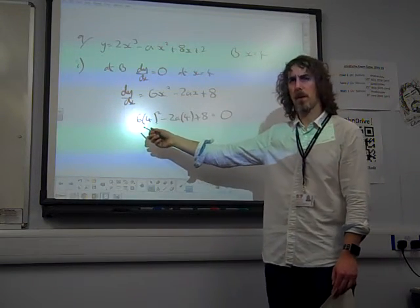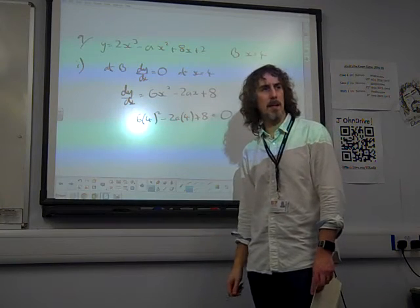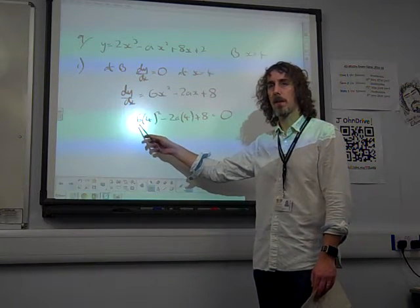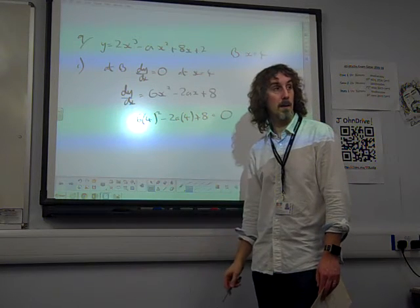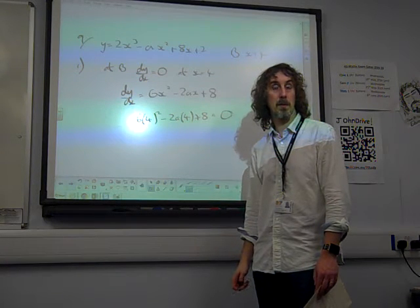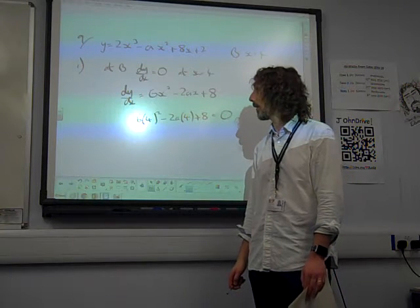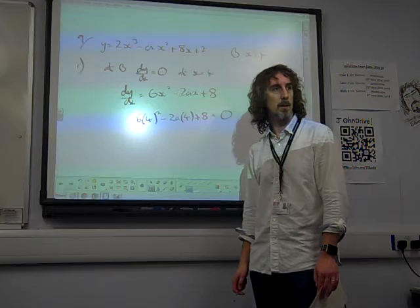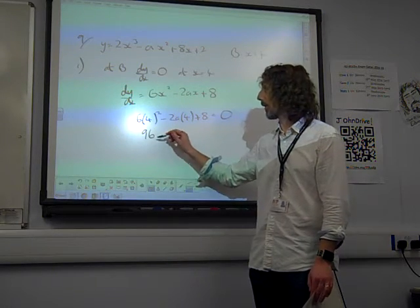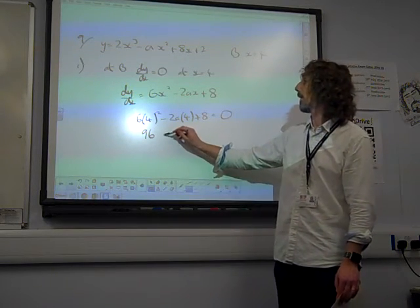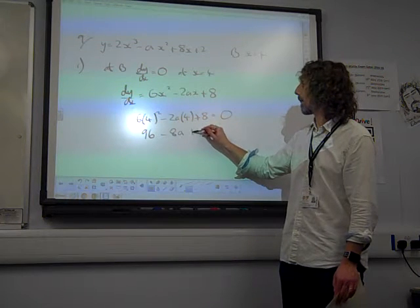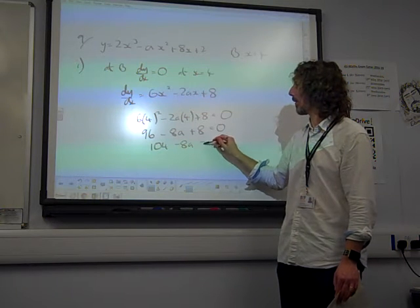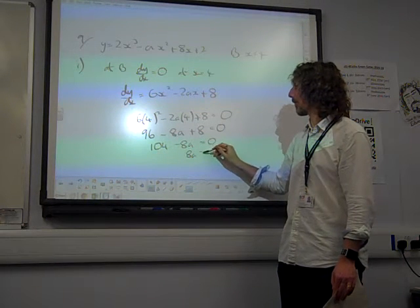Now, this caught a few people out. 6 times 4 squared. Be really careful about the mental arithmetic. That's 6 times 16. 6 times 16 is 96. So we've got 96 as our value. Take away 8a plus 8 is 0. So 104 take away 8a is 0. So 8a is 104.